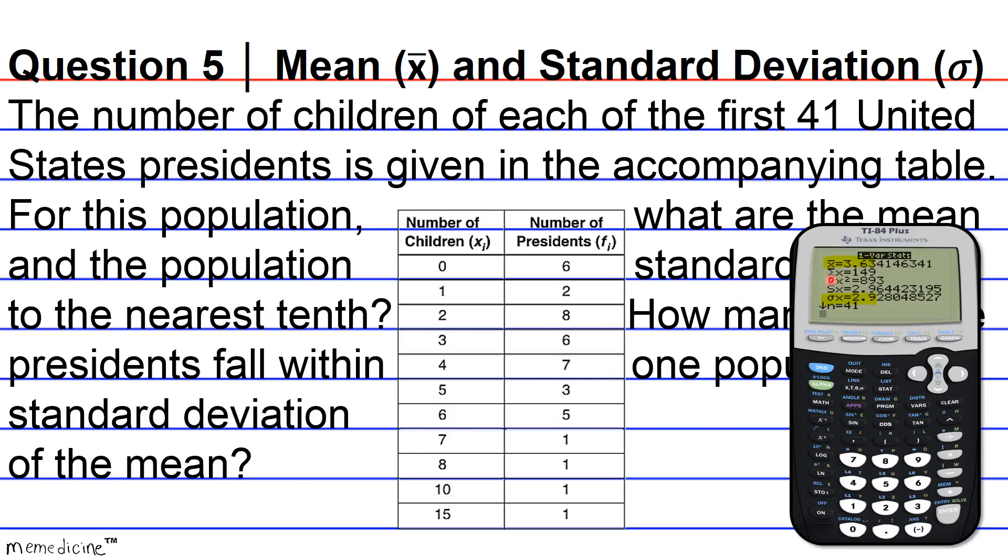They want to know how many presidents fall within one population standard deviation of the mean. To figure this out, the first thing that we're going to have to do is find out the range that's one standard deviation from the mean. Remember, in the positive direction as well as in the negative direction. So our range will look like this. Our sample mean minus the population standard deviation all the way to our sample mean plus this population standard deviation. We just input our values of 3.6 minus 2.9 to 3.6 plus 2.9. And we get the values or the range of 0.7 to 6.5.